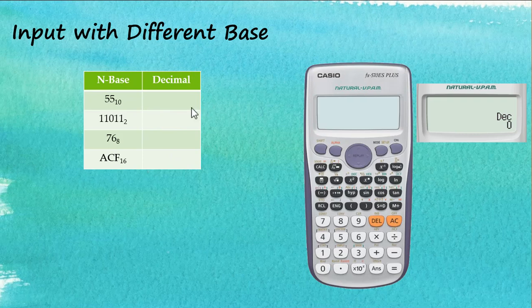Let's key in the first number: 55 with base 10, which is decimal. To tell the calculator this is base 10, we use this button here — we can see there's a 'base' label. So: Shift, Base.